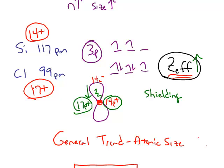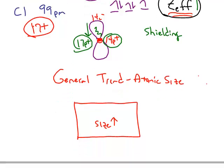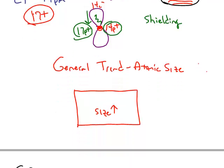If you put both of these together, you can have a general trend of atomic size. So this rectangle is showing a generic periodic table. The size of atoms, in general, increases as you move down a column, and the size increases as you move from right to left.